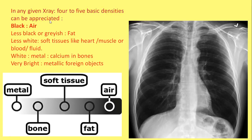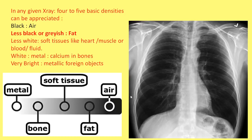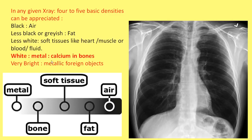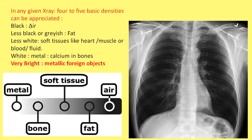On one end of the spectrum, black represents air — air in the lung parenchyma. Less black or grayish is fat, such as fat in the subcutaneous tissues of the chest wall. Less white corresponds to soft tissues like the heart, fluid, or liver and diaphragm. White corresponds to calcium in the bones, and very bright or completely white represents metallic foreign objects. So the 5 basic densities are: black (air), less black (fat), less white (soft tissues such as heart, muscle, blood, or fluid), white (calcium in bones), and very bright (metallic foreign objects).